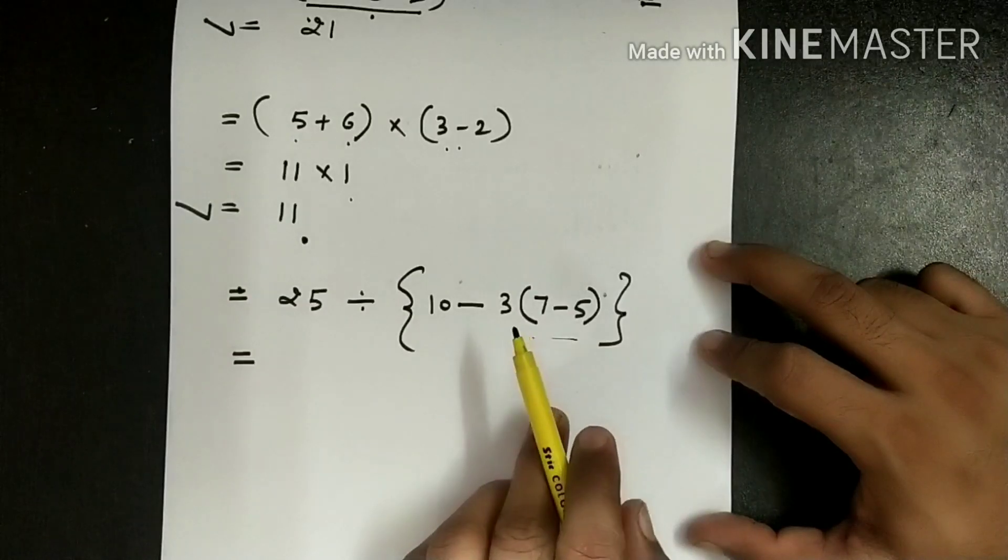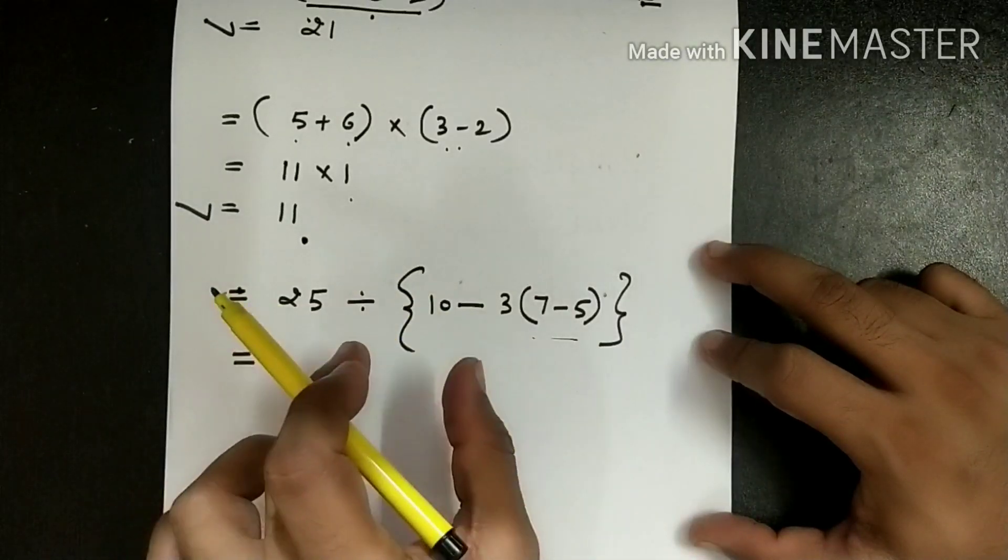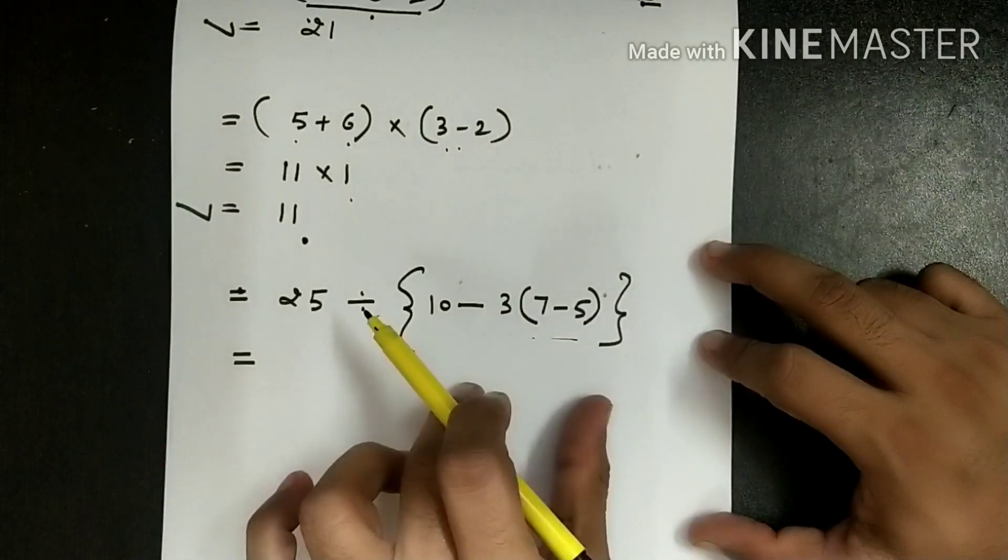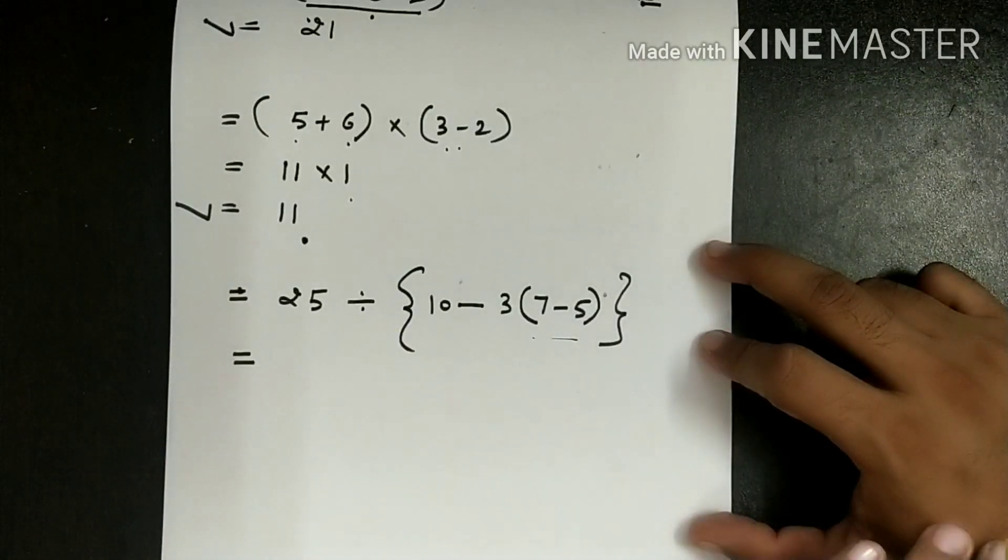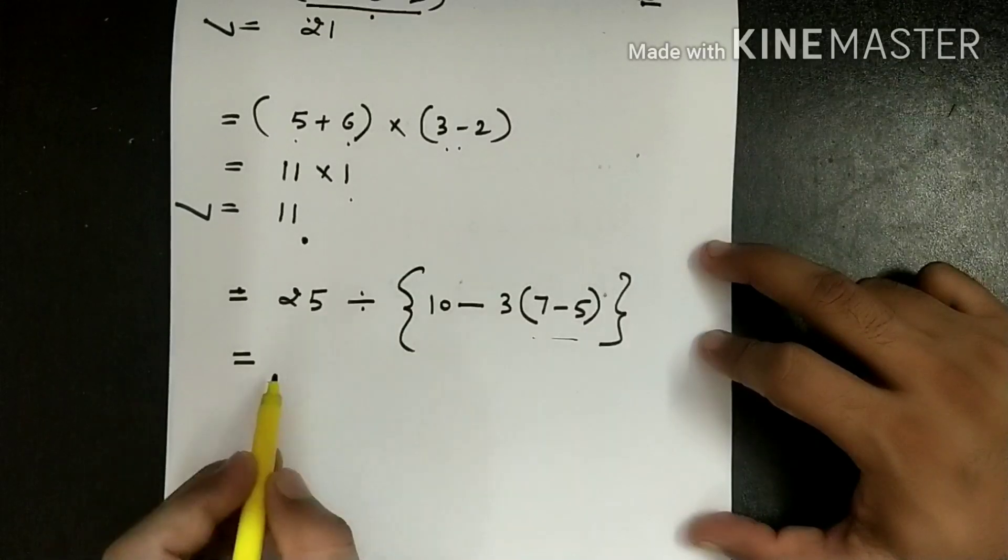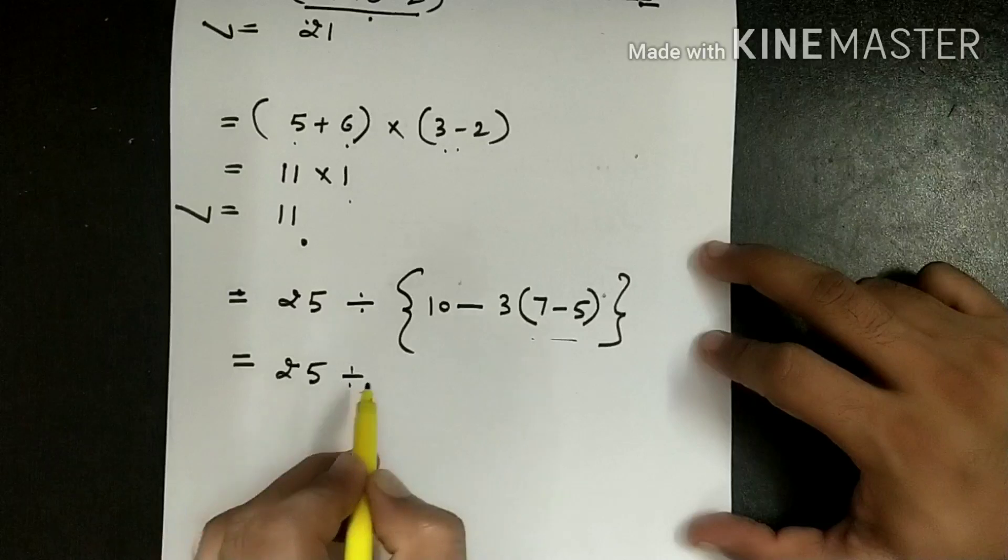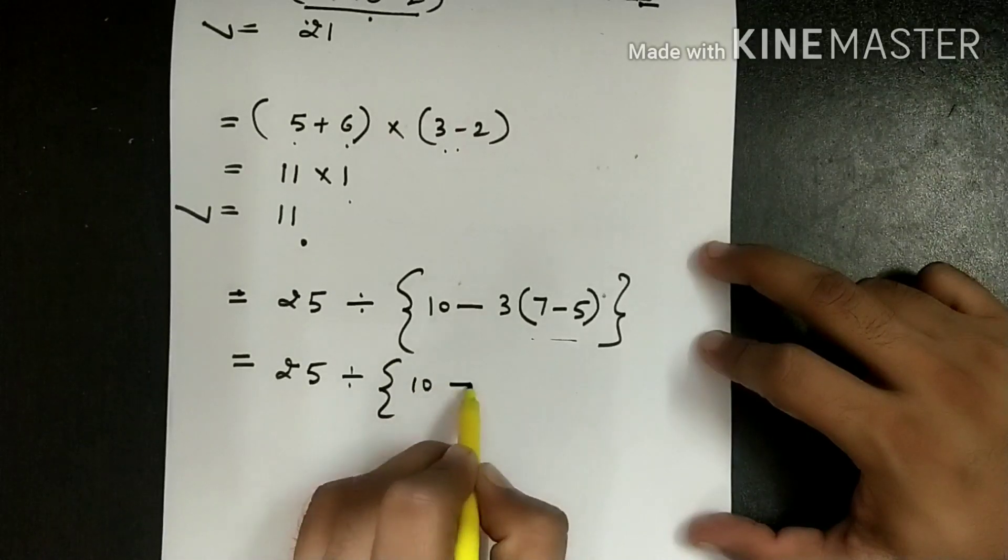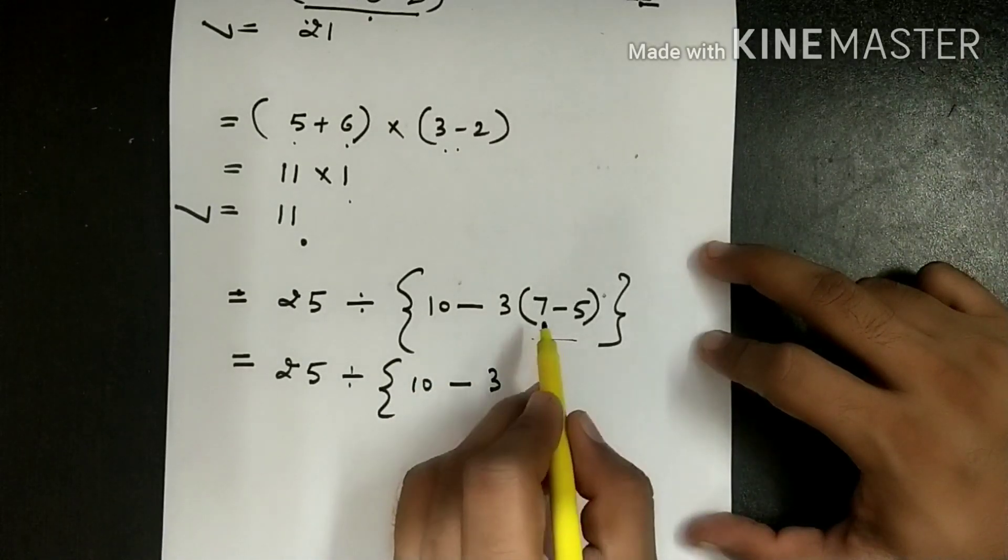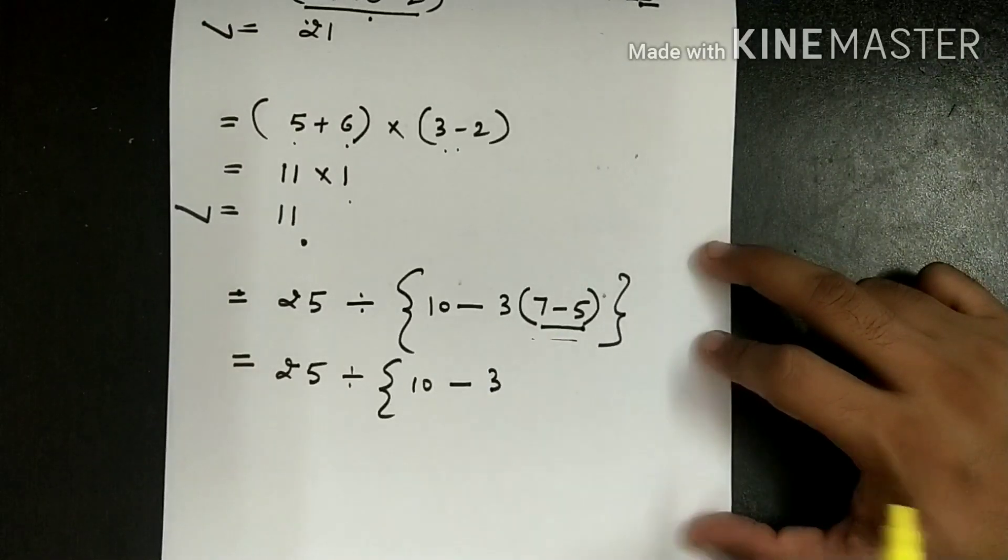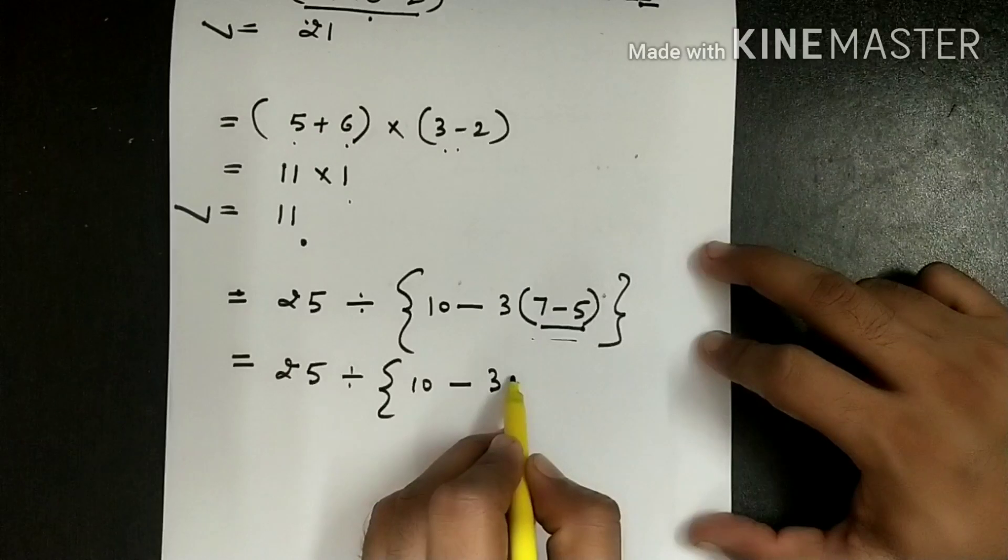So first of all we have to solve the smaller brackets and finally we will consolidate the bigger bracket. So now what we have to do here is we will write 25 divided by 10 minus 3, and if we solve this bracket, 7 minus 5 will give us 2.